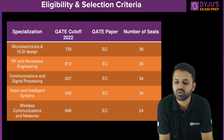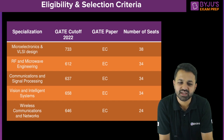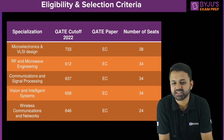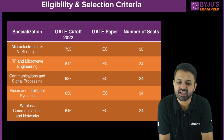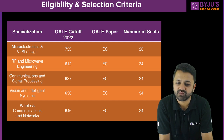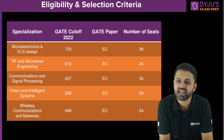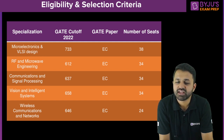Vision and Intelligent Systems has a GATE score of 658, and Wireless Communication and Networks has a GATE score of 646. If you are looking at IIT KGP, Microelectronics should be your first preference, and the second preference should be Communication and Signal Processing or Wireless Communication and Networks — the latter is handled by the School of Communication Engineering at IIT Kharagpur, which is well known for communication research.